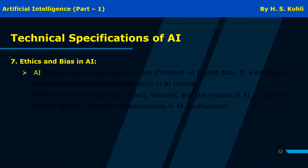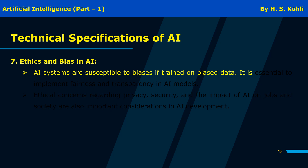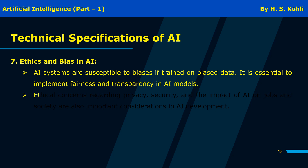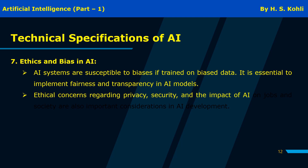Ethics and bias in AI: AI systems are susceptible to biases if trained on biased data. It is essential to implement fairness and transparency in AI models. Ethical concerns regarding privacy, security, and the impact of AI on jobs and society are also critical considerations.